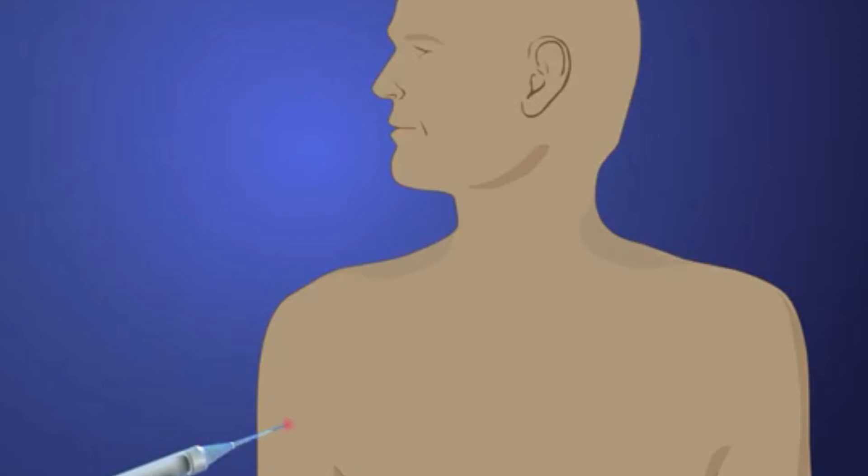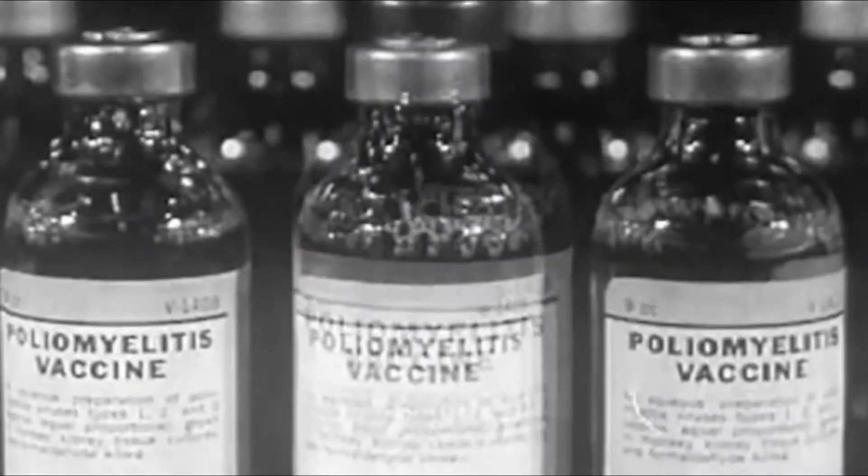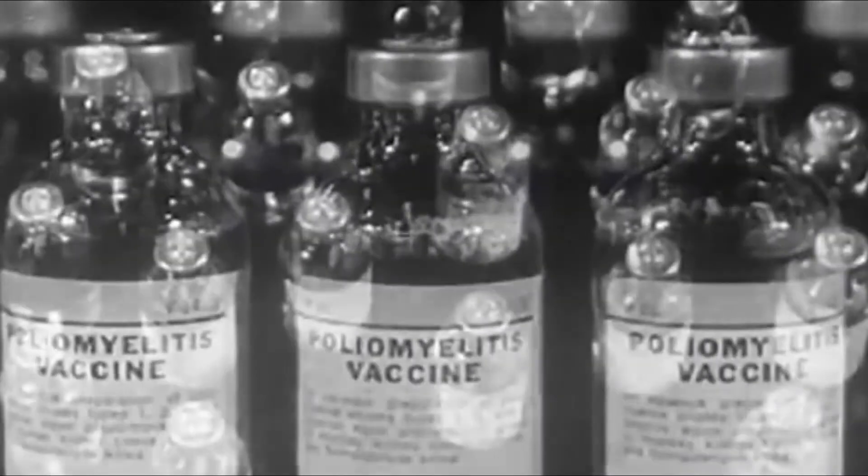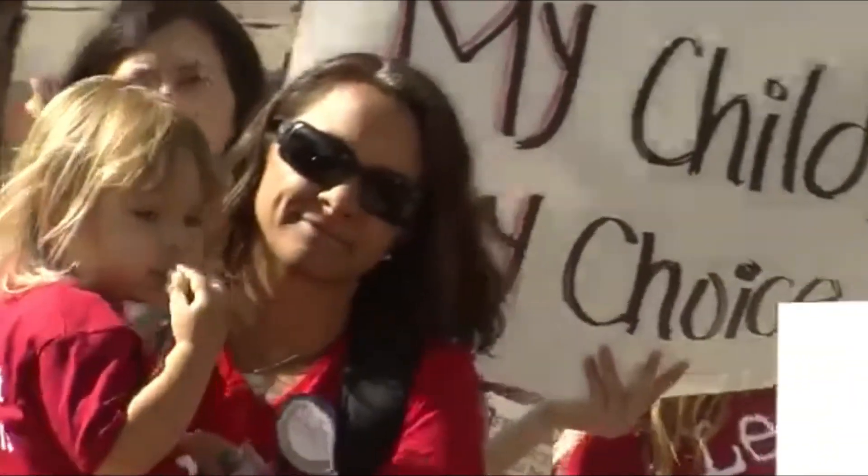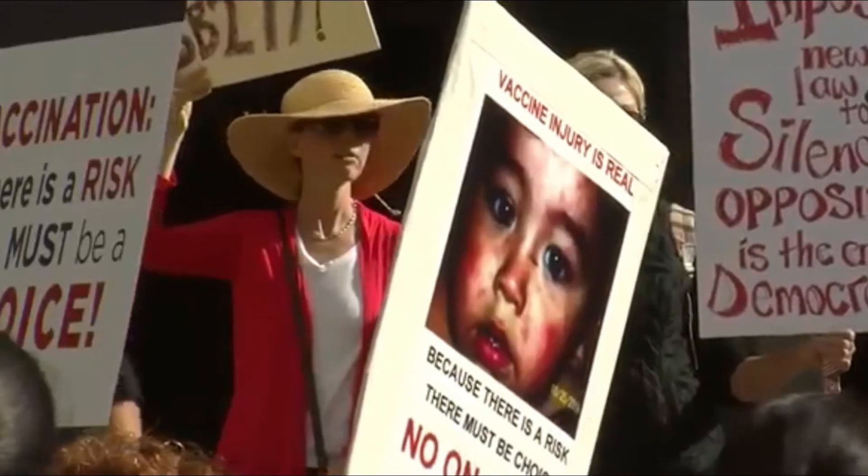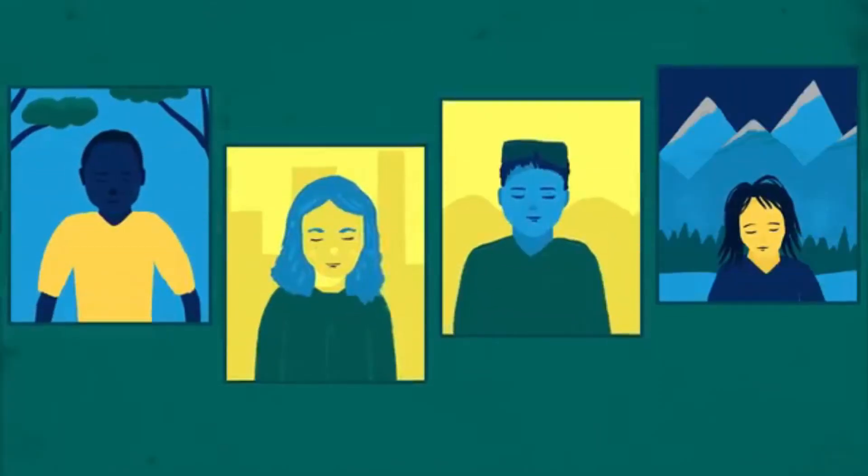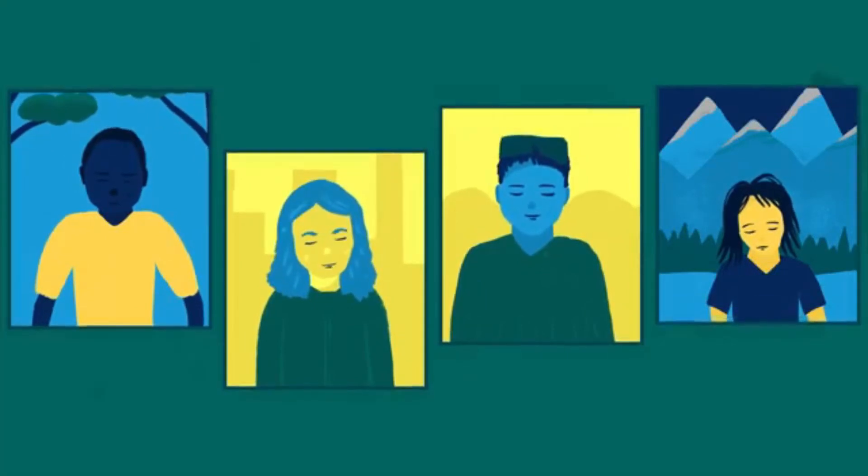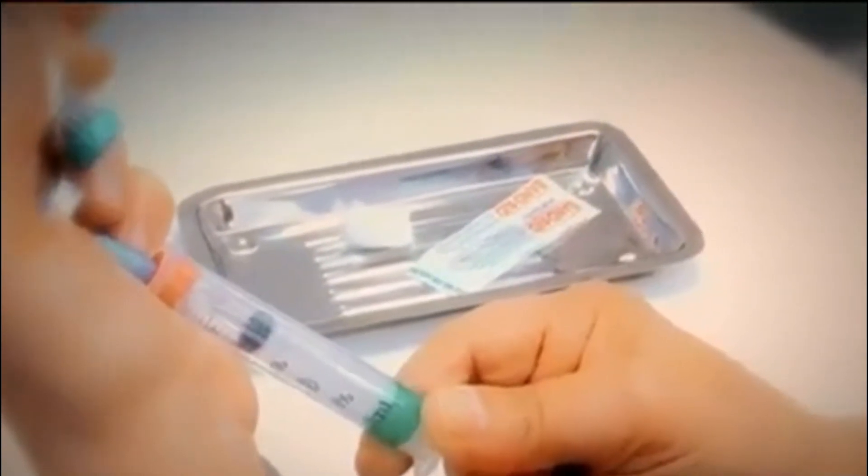Vaccines are frequently given by injection, but some are given by mouth and one is sprayed into the nose. Because immunization programs of the 20th and 21st century have been so successful, many of today's parents have never seen many vaccine-preventable diseases and do not understand the potential for them to reemerge. If too many individuals choose to not vaccinate themselves or their children, some diseases that are now rare or non-existent in this country may resurface.